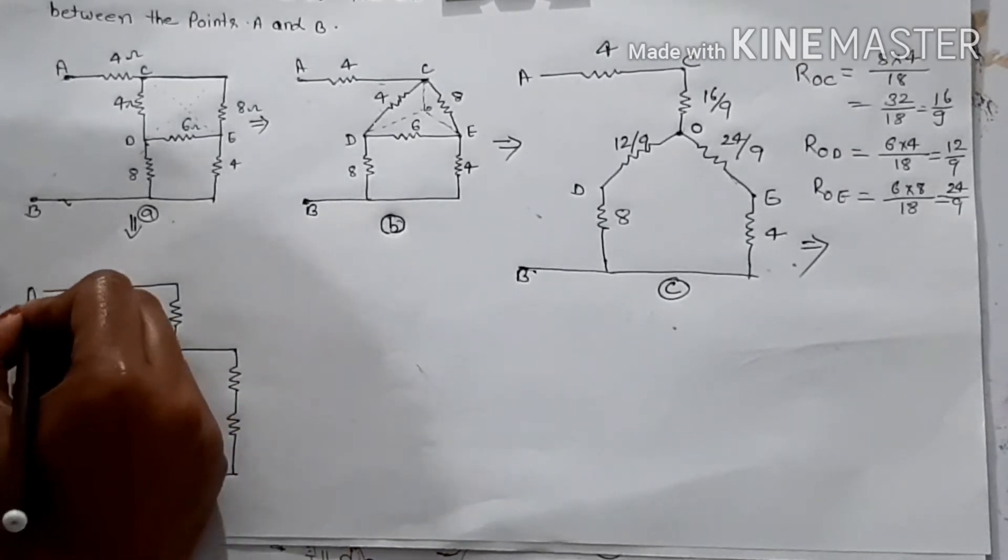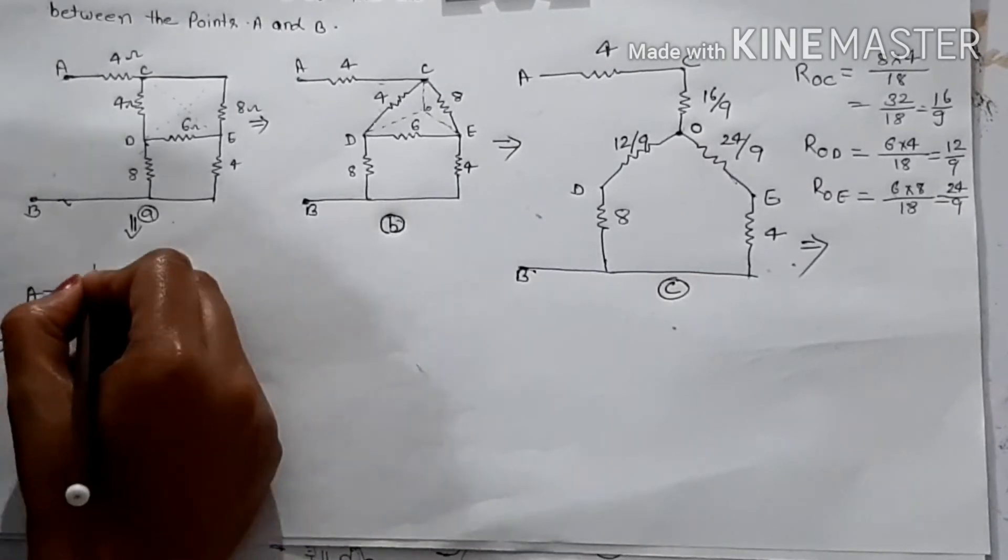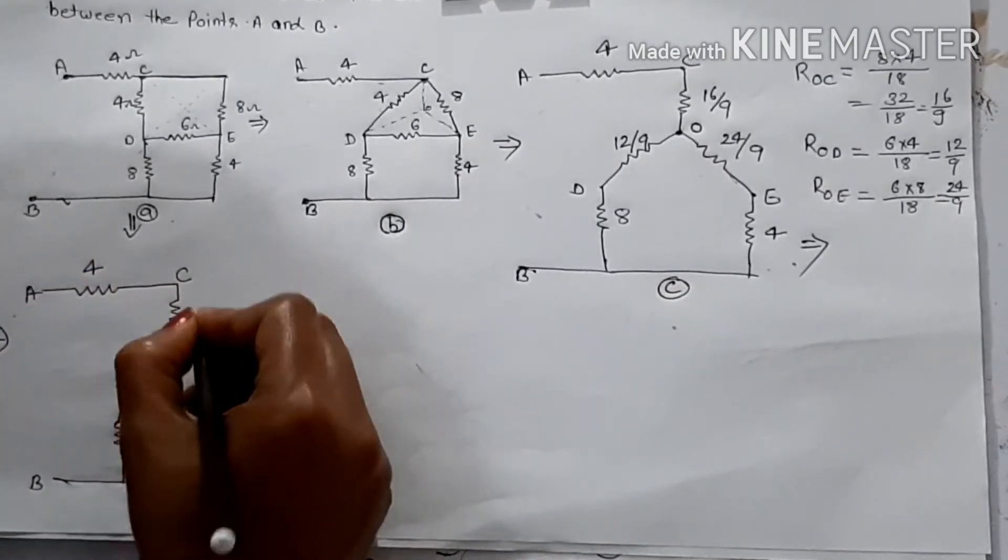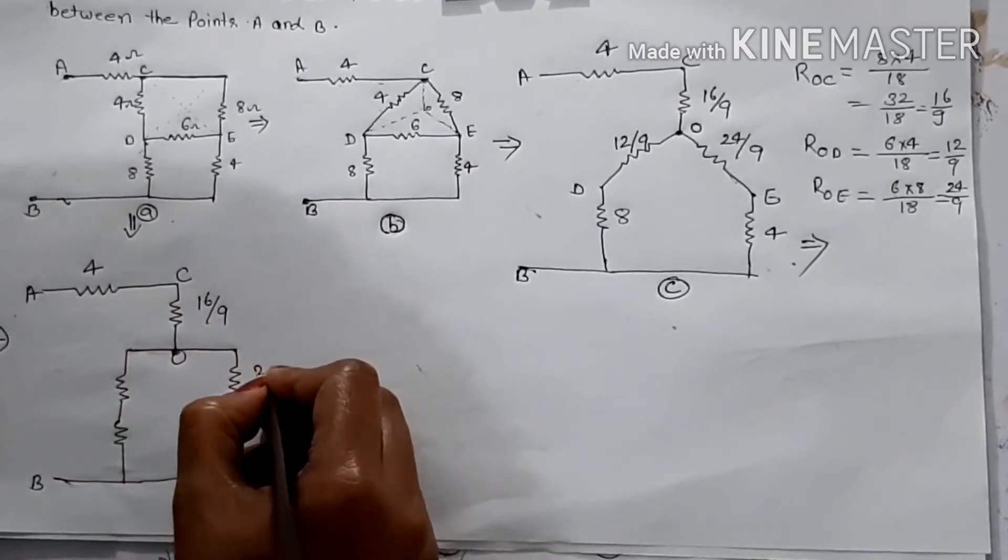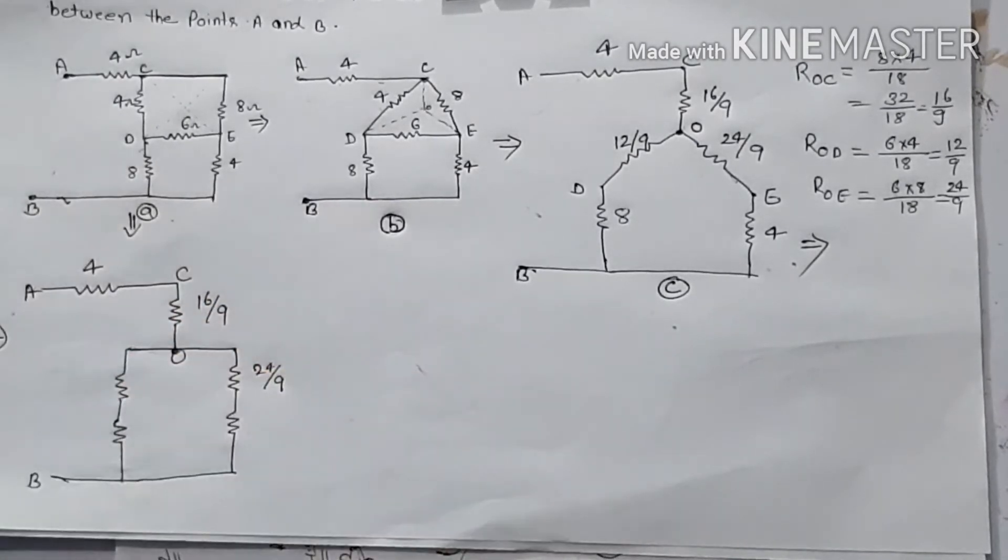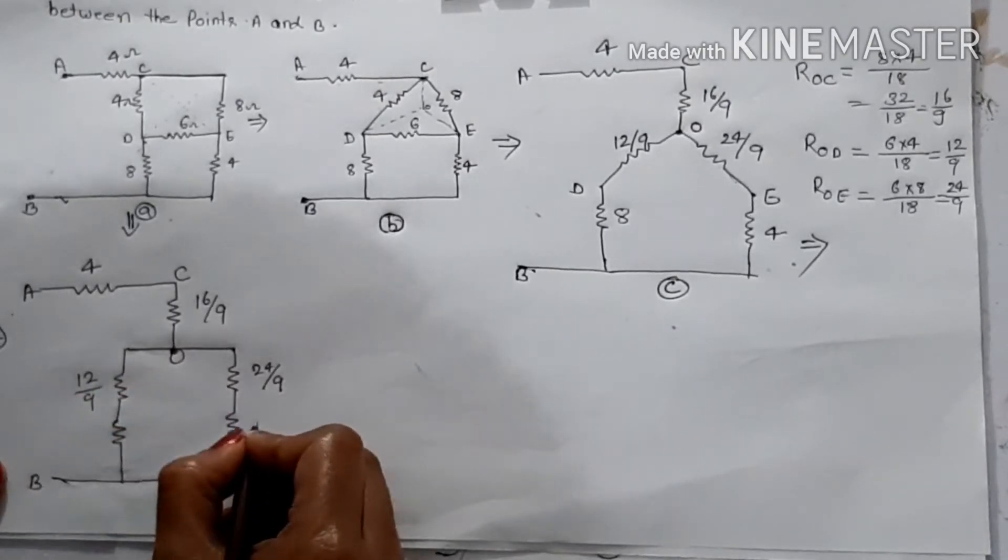Suppose point A, B, C, point O, 16 upon 9, 24 upon 9, 12 upon 9, 4, 8.